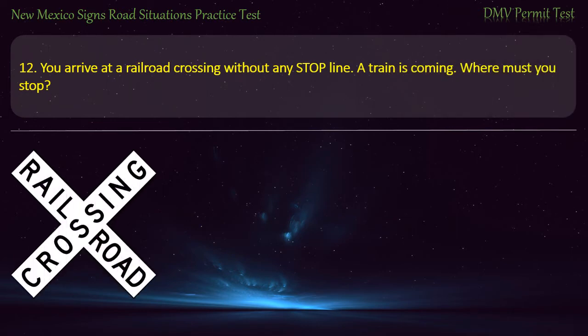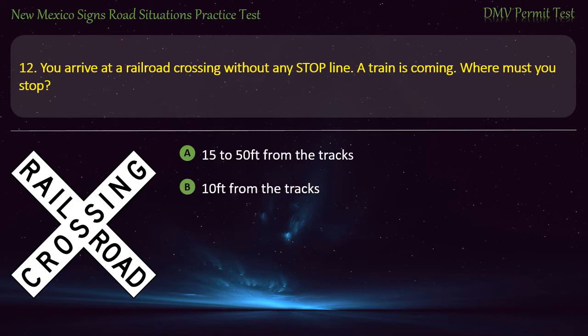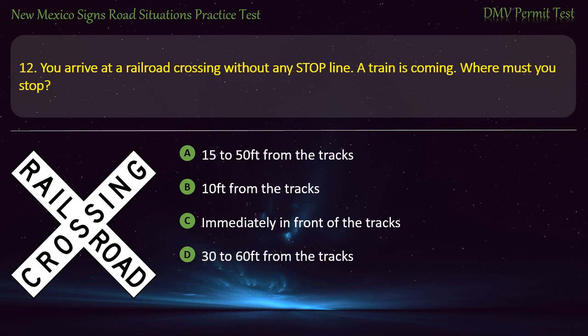Question 12. You arrive at a railroad crossing without any stop line and a train is coming. Where must you stop? Options: 15 to 50 feet from the tracks; 10 feet from the tracks; immediately in front of the tracks; or 30 to 60 feet from the tracks. Answer: 15 to 50 feet from the tracks.